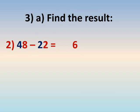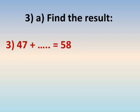Number two: 48 minus 22. Units minus units — eight minus two: count from two to eight: after two, three, four, five, six, seven, eight — that's six. Tens minus tens — four minus two: count from two to four: after two, three, four — that's two. The answer is twenty-six.